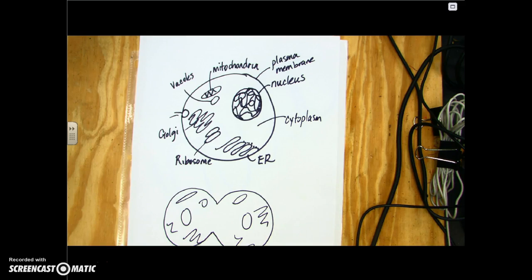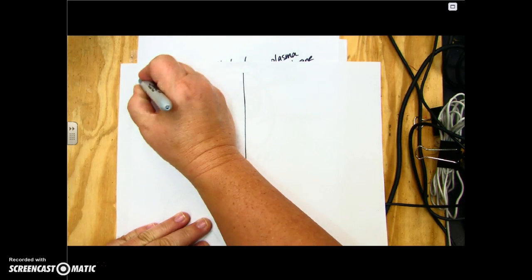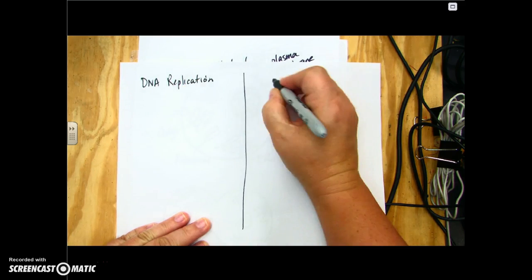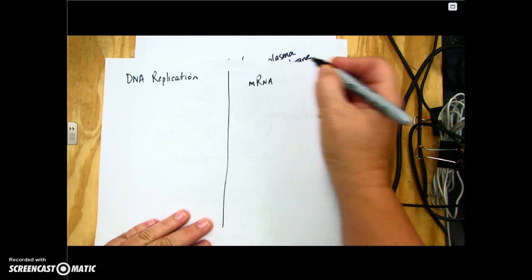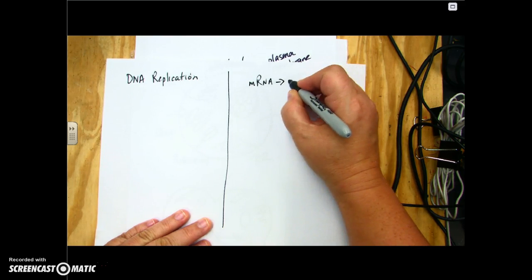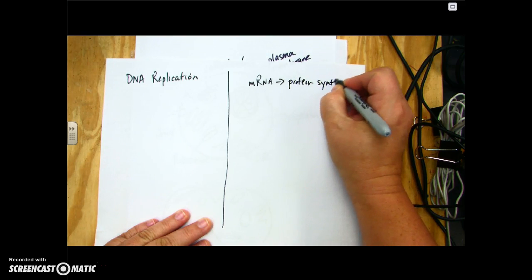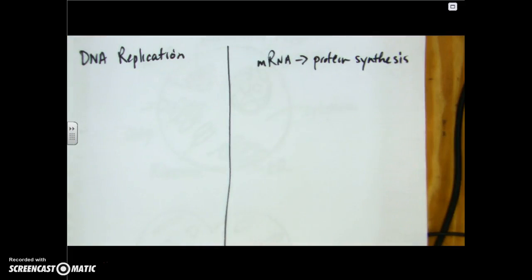We're going to look at the ribosome when we talk about RNA and protein synthesis. What I want you to understand is that when we talk about DNA replication and protein synthesis, we're actually talking about different events, and a lot of you get them confused. DNA replication is separate from mRNA function, which is to make a protein — that's protein synthesis — and you have to understand the difference between those two.